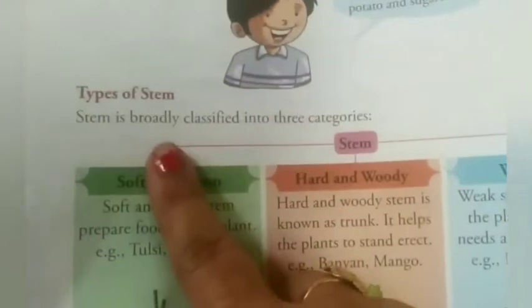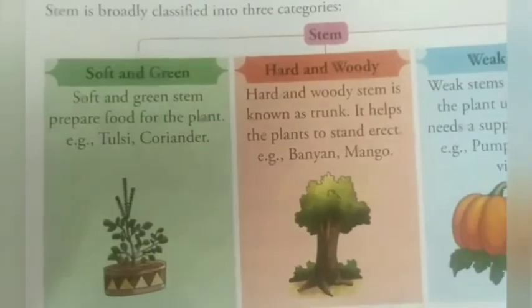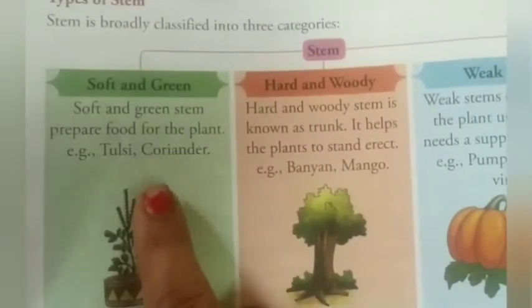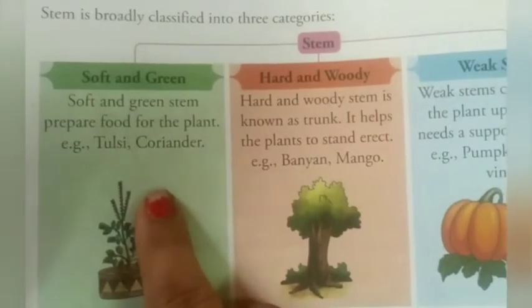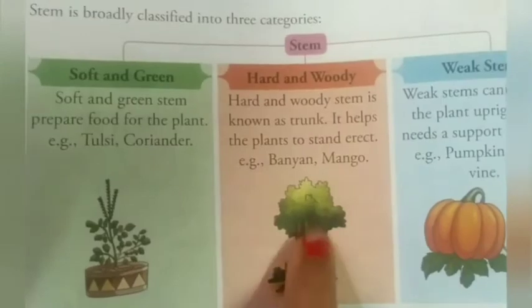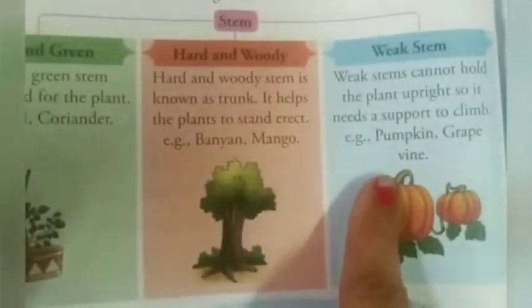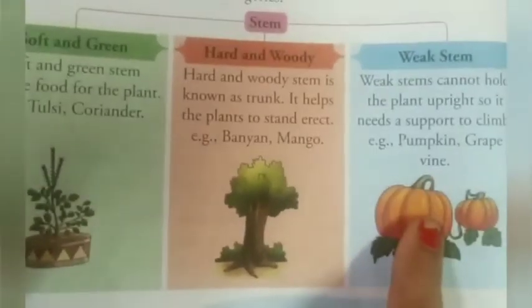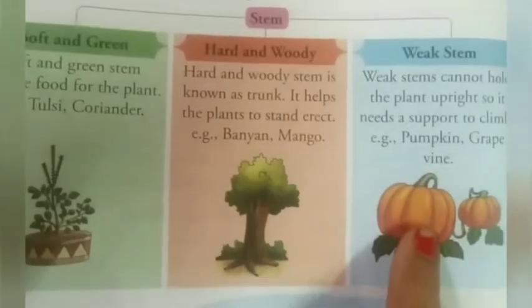Types of stem: stem is broadly classified into three categories. First, soft and green stem — like in herbs such as tulsi, coriander, mint, and banana — they prepare food for the plant. Second, hard and woody stem, also known as trunk, helps the plant stand erect, like banyan, mango, and teak. Third, weak stem — cannot hold the plant upright, very thin, needs support to climb, like pumpkin and grapes.